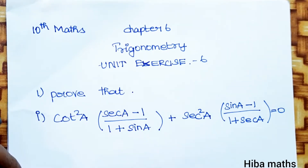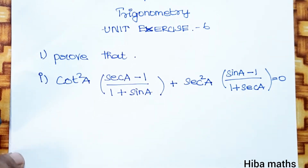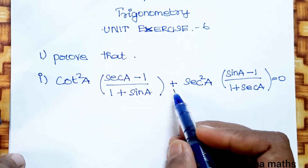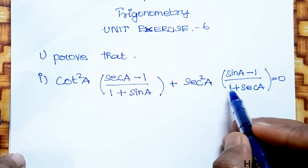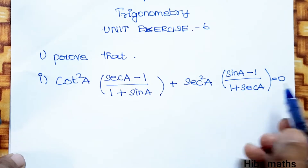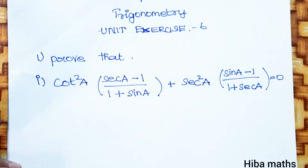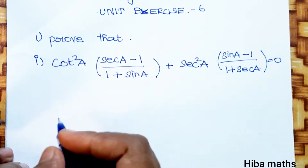Hello students, welcome to Heba Max 10 Standard, Chapter 6 Trigonometry. The first question: prove that cot squared a times (secant a minus 1) divided by (1 plus sin a), plus secant squared a times (sin a minus 1) divided by (1 plus secant a), is equal to 0. In solution, we solve the LHS and prove it equals RHS.